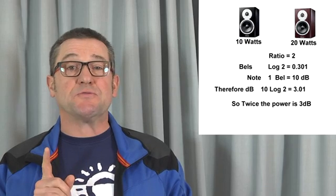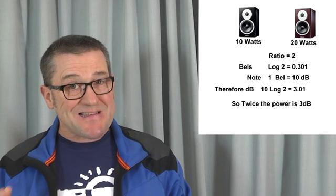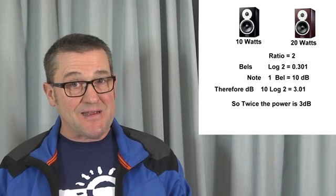In comparing the power of these two speakers, the ratio of the power is 2. We can express this in bells, named after Alexander Graham Bell, by calculating the log of 2, which is 0.301. But we normally express this in decibels. Note that 1 bell equals 10 decibels. So this ratio of 2, expressed in decibels, is 3 decibels.